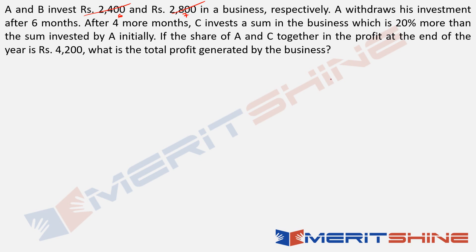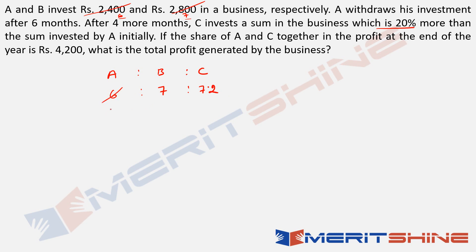A withdraws his investment after six months. After four more months, C invests a sum in the business which is 20% more than the sum invested by A initially. Let me quickly write the ratio of their investments — A to B to C. We already know A to B is 6 to 7. C is 20% more than A's 6, so 20% of 6 is 1.2, making C equal to 7.2. We don't like decimals, so multiply the whole thing by 5: A is 30, B is 35, C is 36.